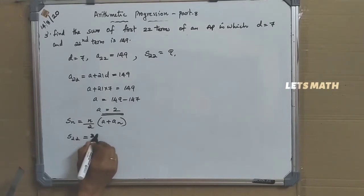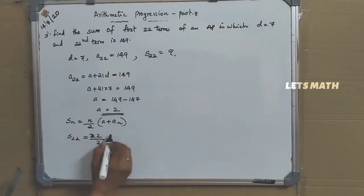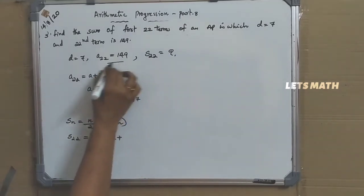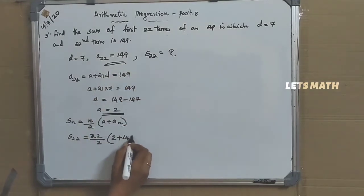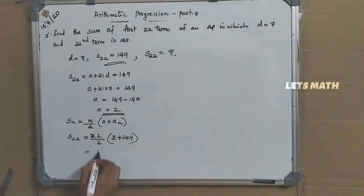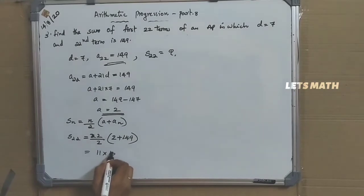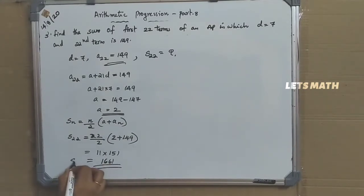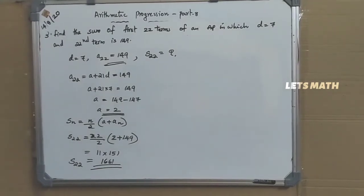We need to find S22. N is 22. So 22 by 2 into A plus A22, that is 11 into 2 plus 149, giving 11 into 151, which is 1661. So S22, the sum of first 22 terms, is 1661.